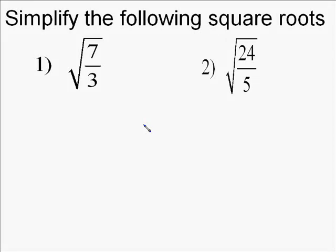These two problems deal with simplifying square roots, specifically when you have a square root in the denominator. To simplify these, you first break the fraction into two separate square roots, so square root of 7 over the square root of 3.